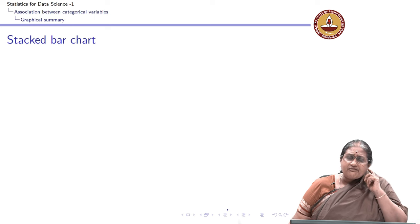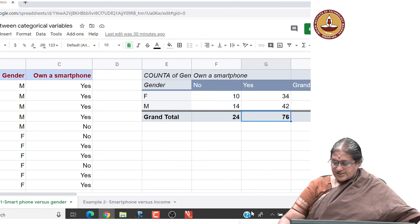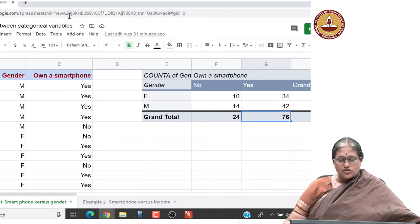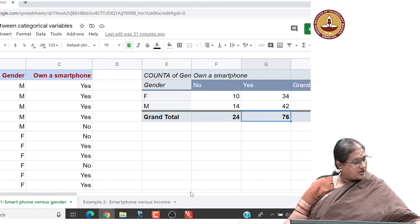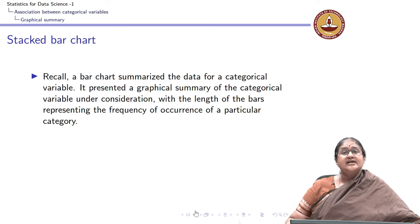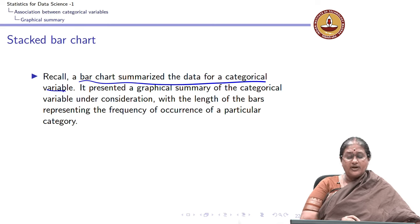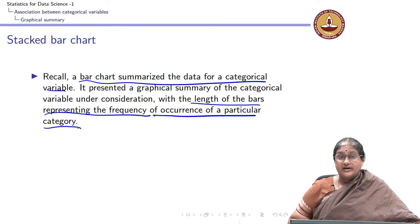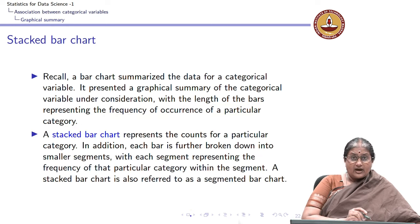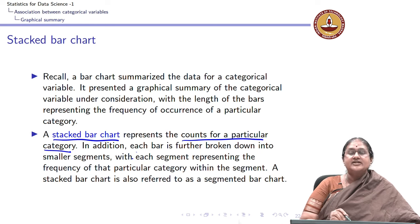Now, how do we graphically show this result? We construct what is called a stacked bar chart, sometimes also referred to as a segmented bar chart. A regular bar chart summarizes data for a categorical variable where the length of the bars represents the frequency of a particular category. A stacked bar chart represents the counts for a particular category, and in addition, each bar is further broken down into smaller segments.